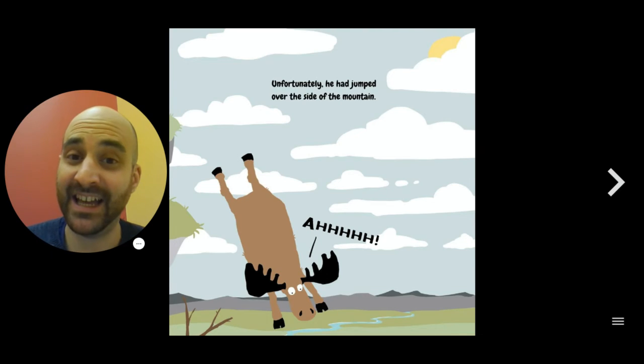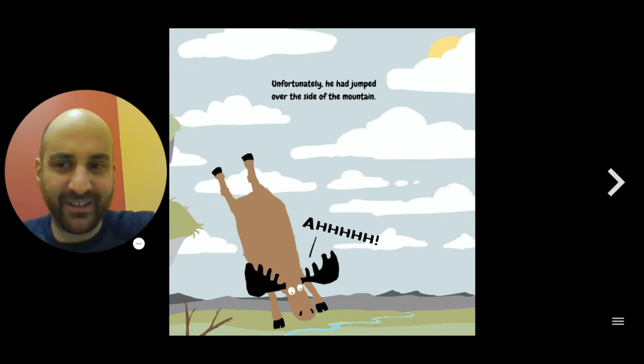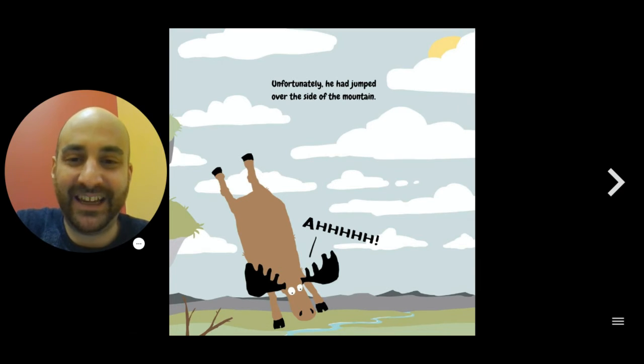But unfortunately, he jumped over the side of the mountain. So let's get this straight. He jumped out of the way to avoid getting hit by a boulder, but he jumped so far that he jumped off the mountain. It seems like he's getting into all kinds of accidents that are, or it gets kind of silly.